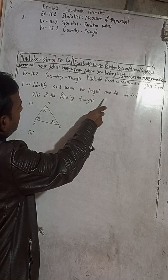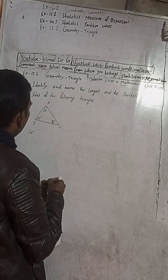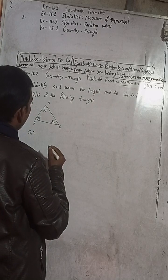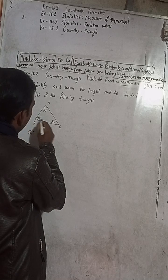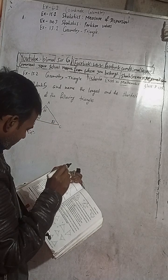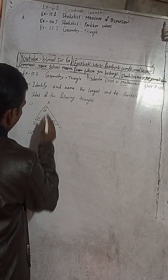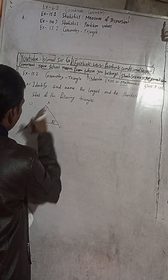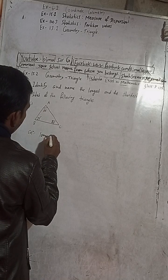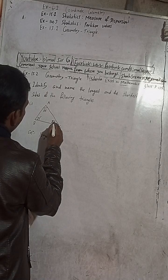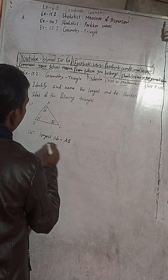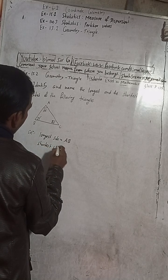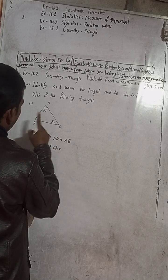The question is 1a: identify and name the longest and the shortest side of the following triangle. So which is the longest? We have to identify. The angles are 35 degrees, 85 degrees, and 60 degrees. So 85 degrees is the greatest angle. The figure may not look exact, but the angles are as given. So the side opposite to the greatest angle — 85 degrees — is AB, the longest side. And 35 degrees is the smallest angle, so AC is the shortest side.